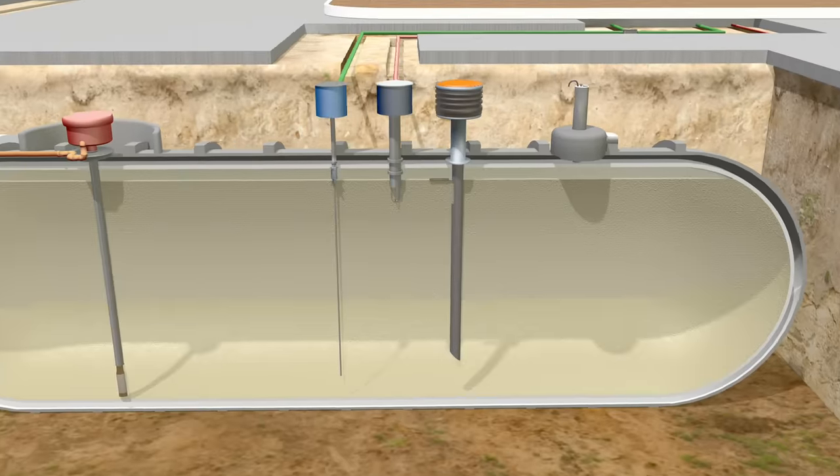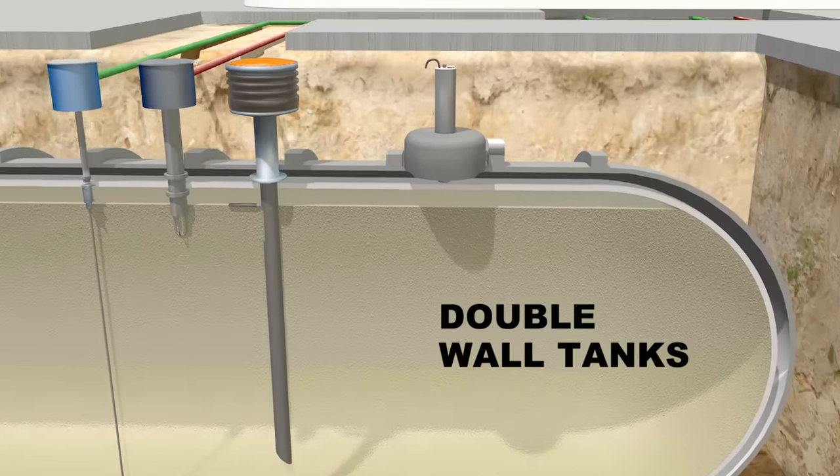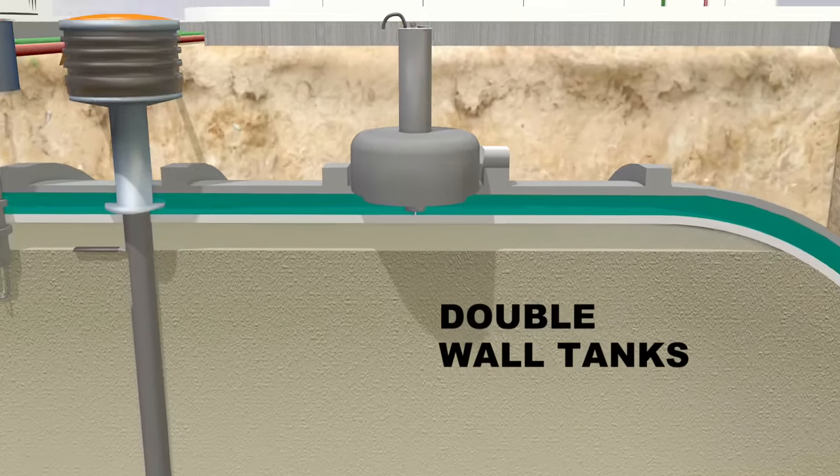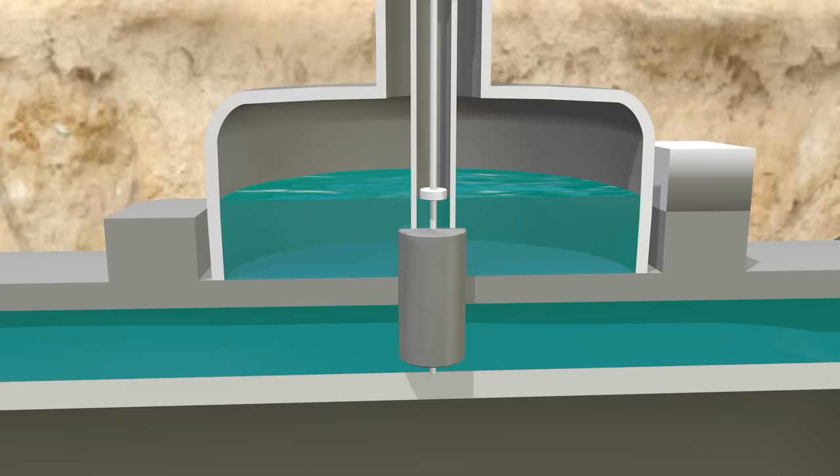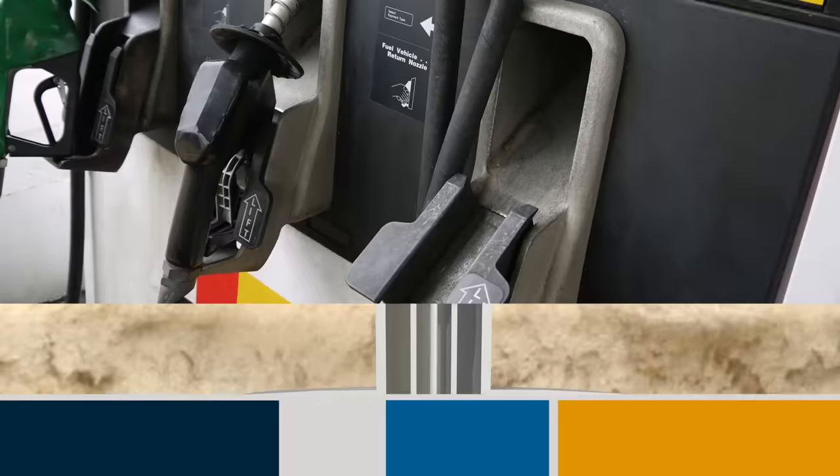Many storage tanks today feature double walls. The space between the walls is filled with brine. Sensors monitor the pressure level of the brine. A leak in either the inner wall or the outer wall will cause the pressure level to decrease and an alarm will sound.